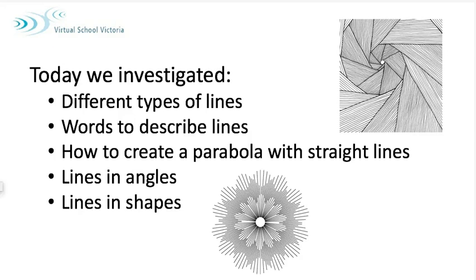Today we investigated the different types of lines, words that we use to describe lines. I'm not strictly sure that's a parabola, but we created an optical illusion with straight lines. We looked at lines in angles and next week we'll look more closely at lines in shapes. Thank you very much for your attention to detail. Have a look online to find out the different patterns you can make with straight lines. Thank you.